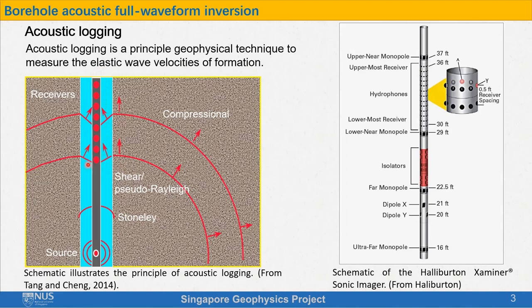Then the waves are kept as acoustic logging data, and we can obtain elastic wave velocities from this acoustic logging data. This figure shows the schematic of the Halliburton Examiner sonic imager, an advanced acoustic logging tool. We can see that there are 13 rings of receivers or hydrophones, each ring containing eight evenly distributed receivers. The interval between the two rings is half-foot.